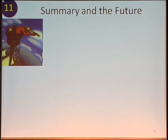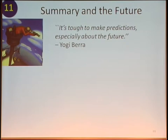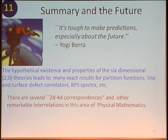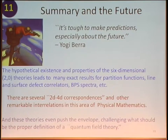Time to summarize and look ahead. As to looking ahead, it's tough to make predictions, especially about the future. What have I said? One thing I've said is the hypothetical existence and properties of the six-dimensional (2,0) theories leads to many exact results for partition functions, line and surface defect correlators, BPS spectra, et cetera. There are also several 2D-4D correspondences and other remarkable interrelations in this area of physical mathematics that can often be traced — perhaps always be traced — to the existence of these six-dimensional theories. And these theories even push the envelope challenging what we think should be the proper definition of a quantum field theory.